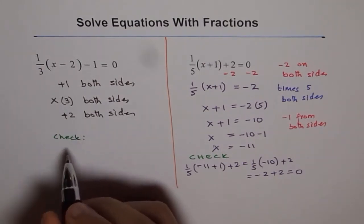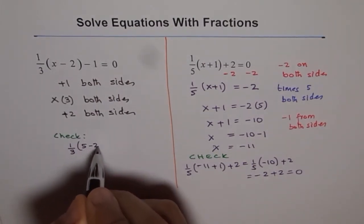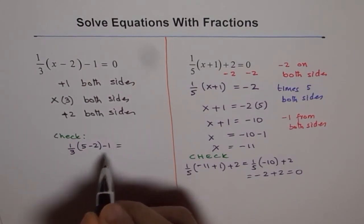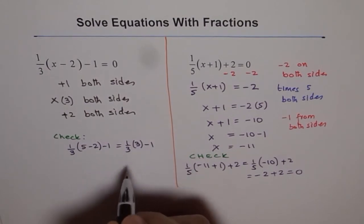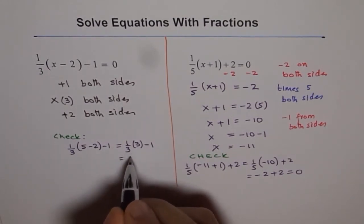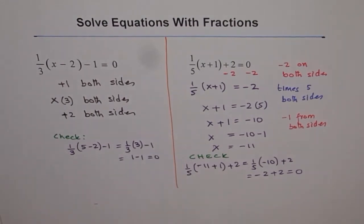So let's check if 5 works. So 1 over 3, (5 minus 2) minus 1. So 5 minus 2 is 3. So we get 1 over 3 times 3 minus 1. And that is 1 minus 1 and that is 0. So it works and that is the right answer.